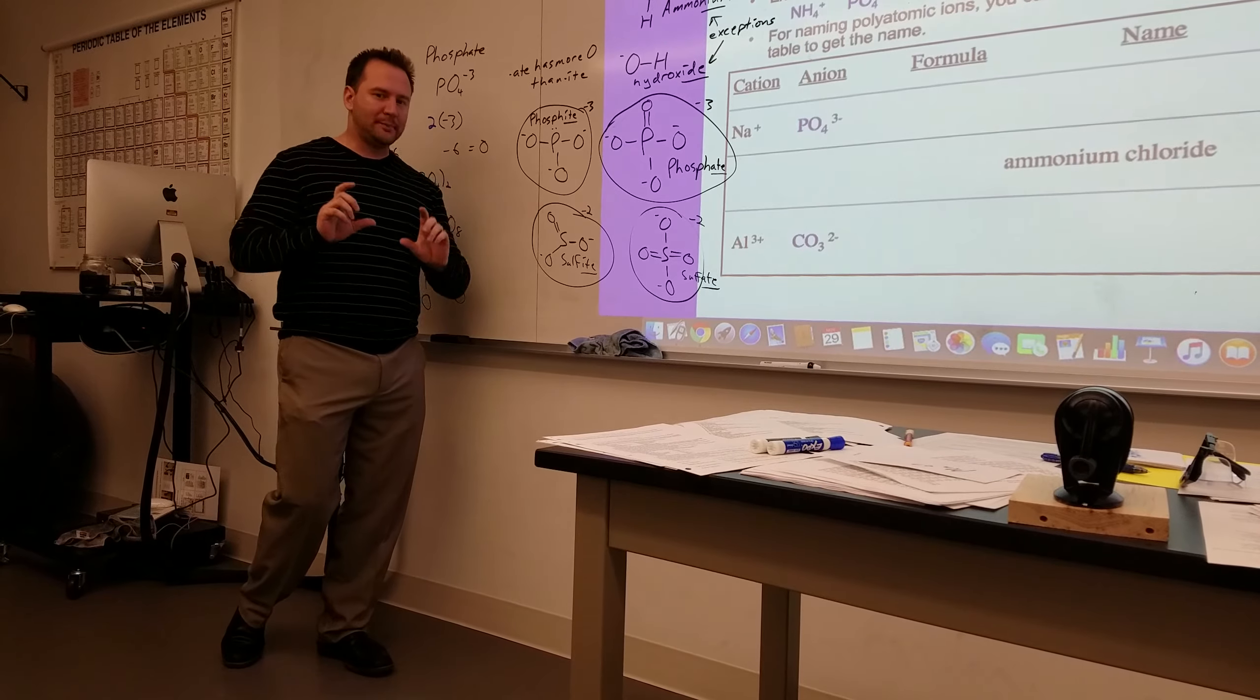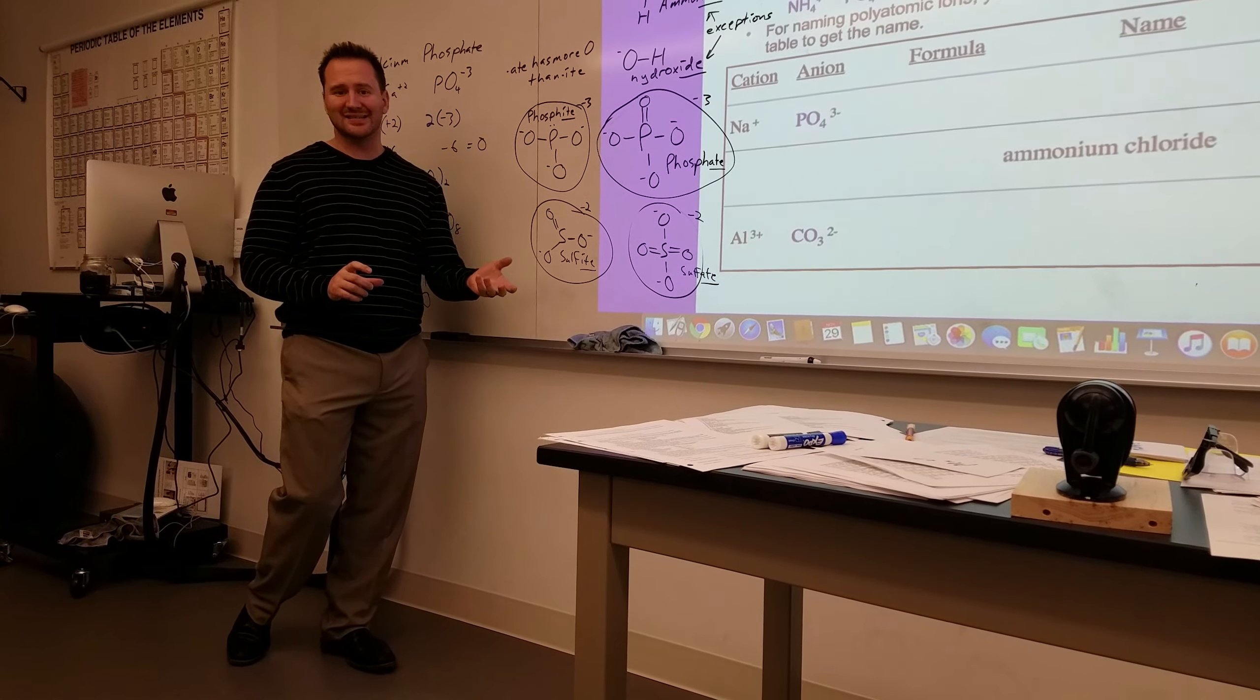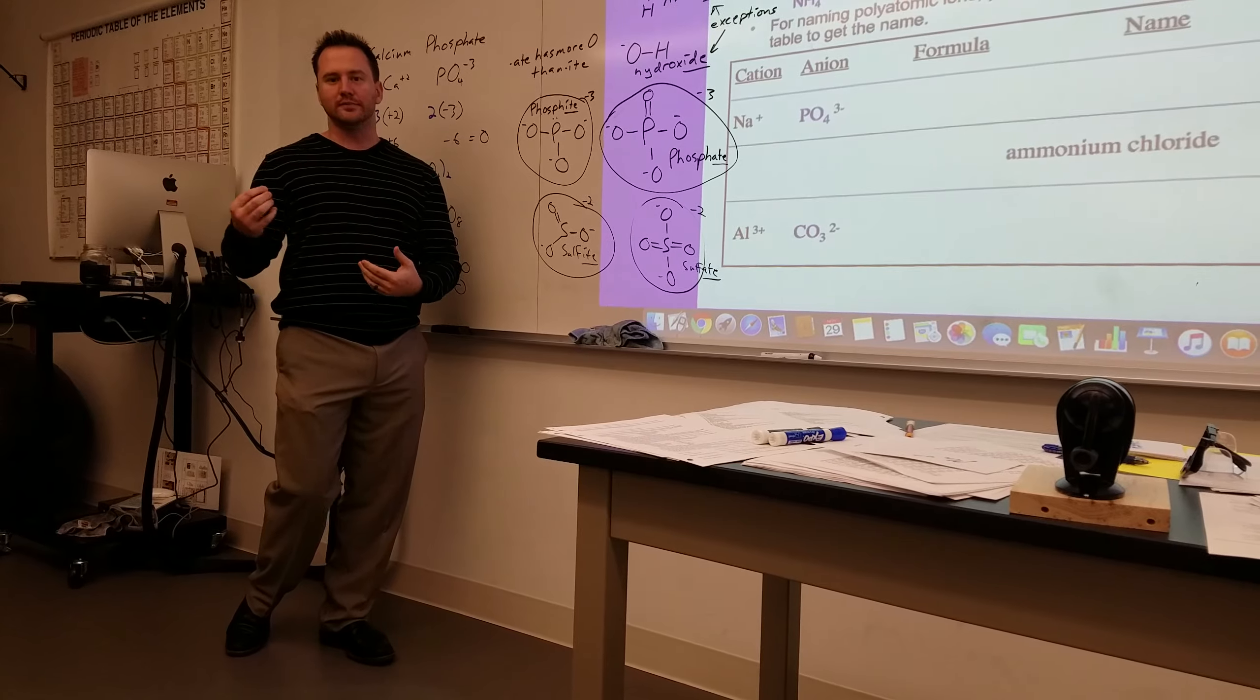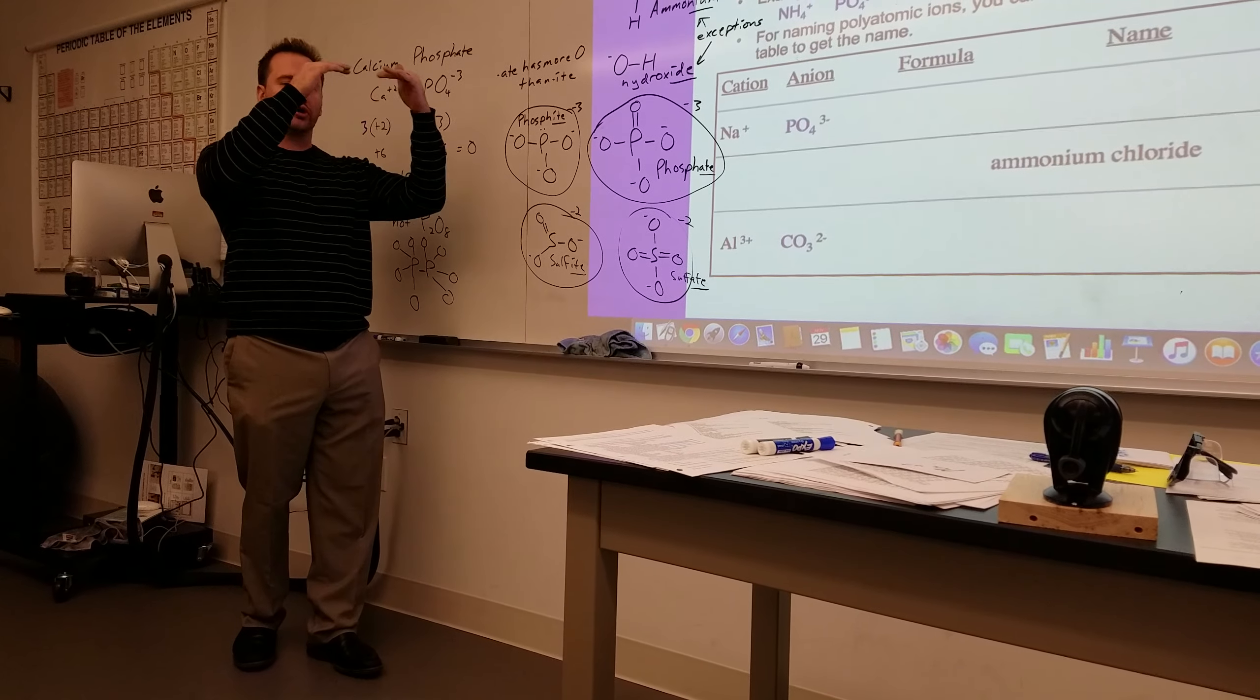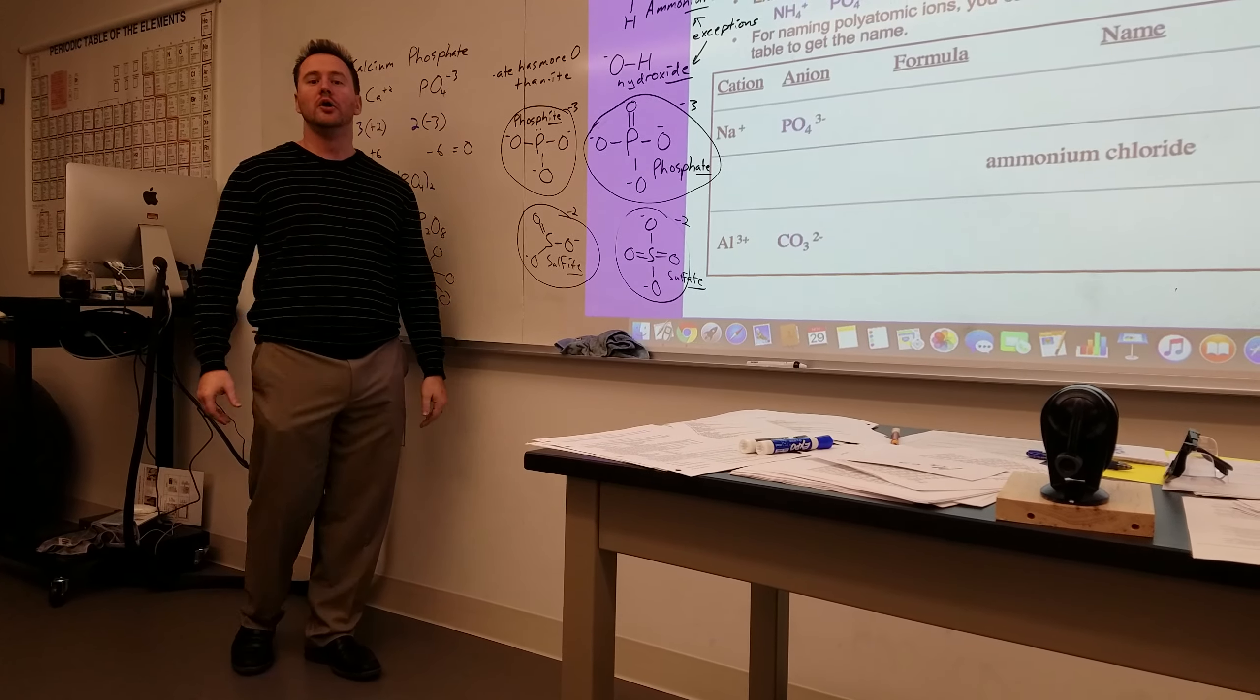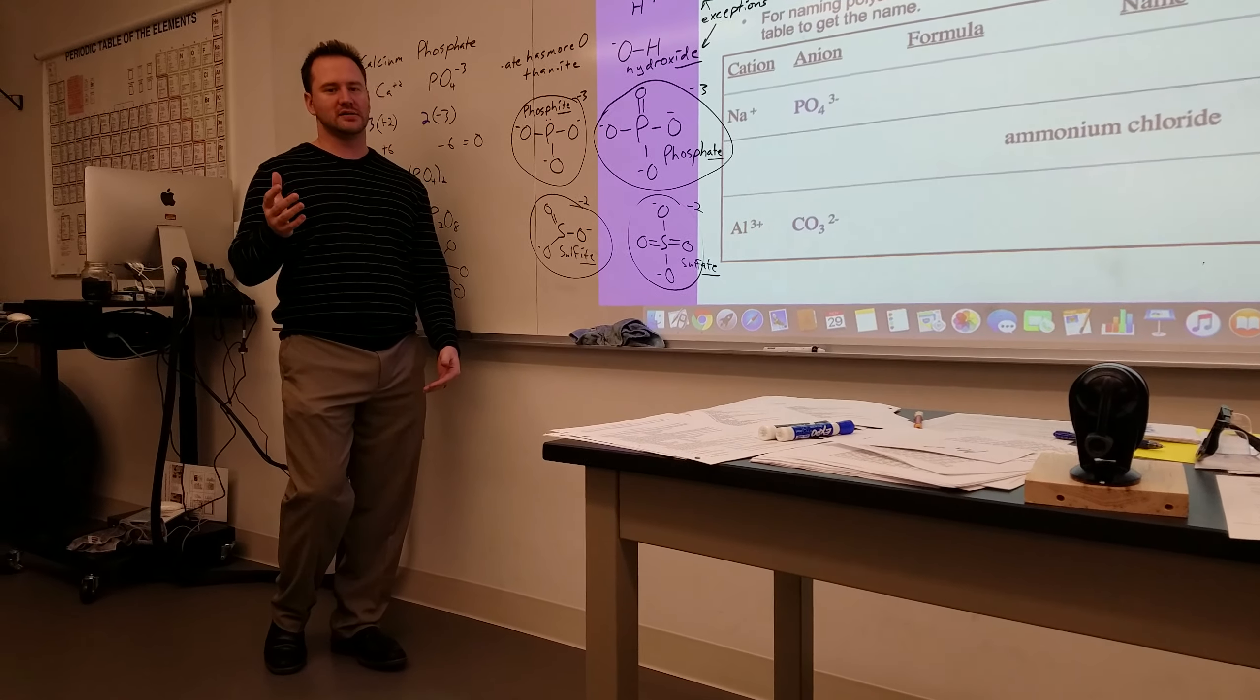There is also a hypochlorite, hypo meaning less than, where you have chlorine with one oxygen, and it still has a negative one charge. That's hypochlorite. And then you can have perchlorate, which is a very common ion, which is ClO4, has a negative one charge.